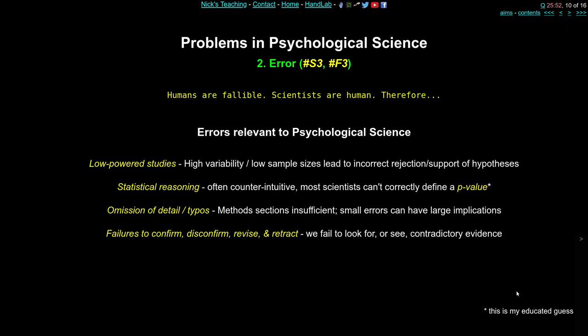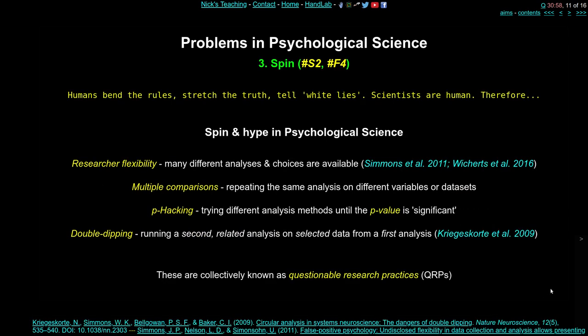Another major problem specific to psychology is that we don't tend to do the same experiment twice. We don't try to confirm our own experiments, or disconfirm them, or replicate other people's experiments. We don't tend to revise previous work or retract problematic papers. In general there's a blindness to the quality of our own science, and this causes mistakes — things in the published literature that should never have been published.